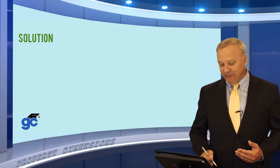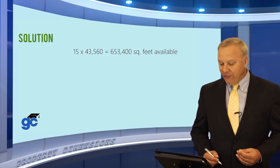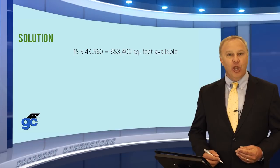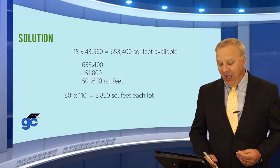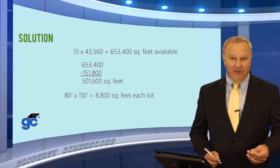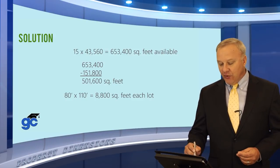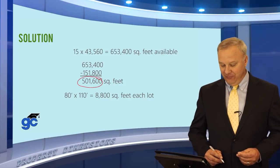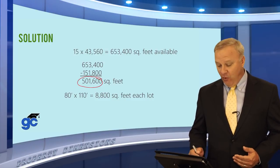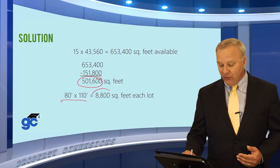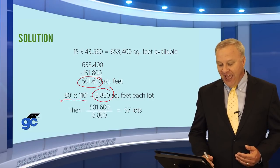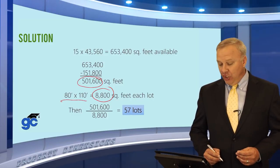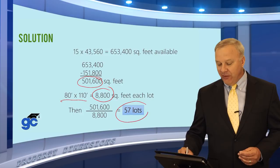The math: 15 acres × 43,560 = 653,400 square feet available. Subtract 151,800 square feet for streets and sidewalks, leaving 501,600 square feet. Each lot is 80 × 110 = 8,800 square feet. Dividing 501,600 ÷ 8,800 = 57 lots that can be developed.